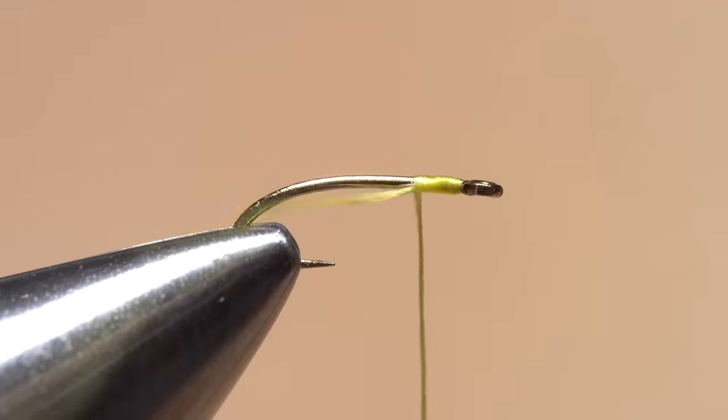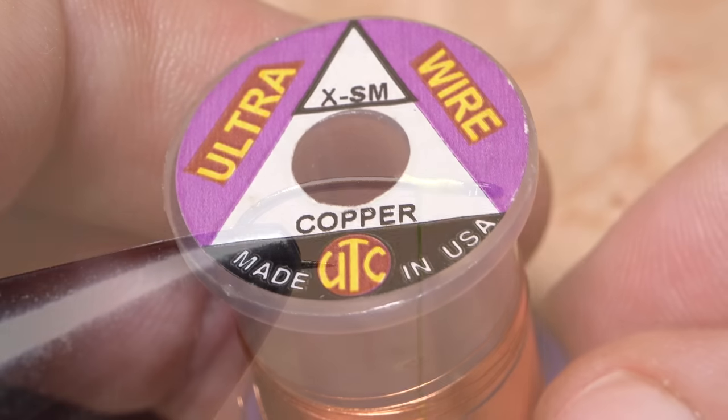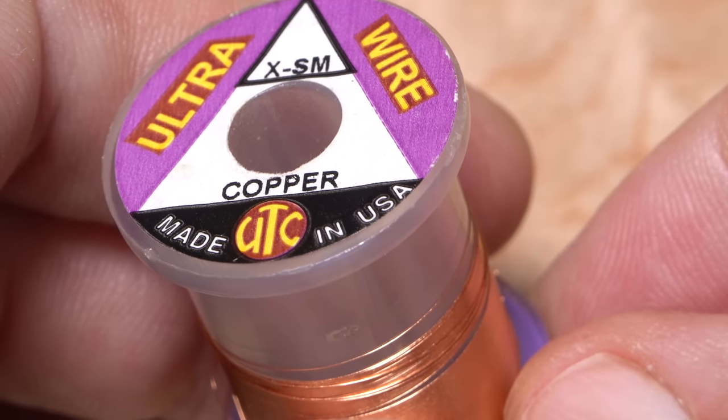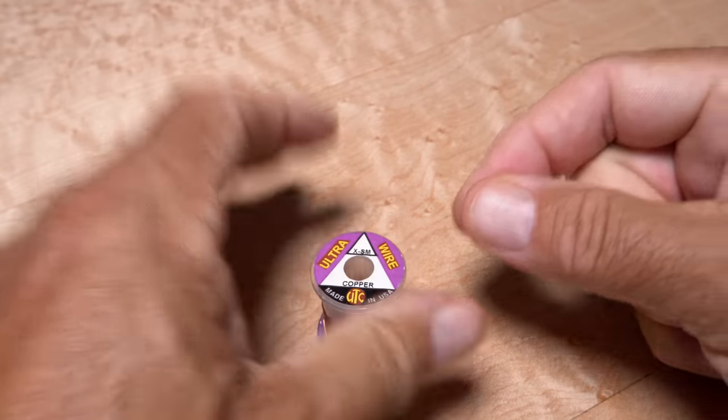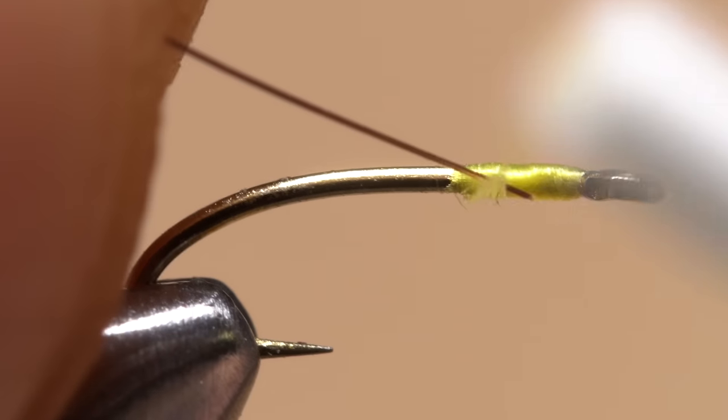Copper-colored UTC extra small ultra wire is used to rib and segment the fly. Even the small size is too big and clunky for a fly this little. A 10-inch length will make numerous flies. Lay one end of the wire against the near side of the hook and take rearward thread wraps to begin securing it.